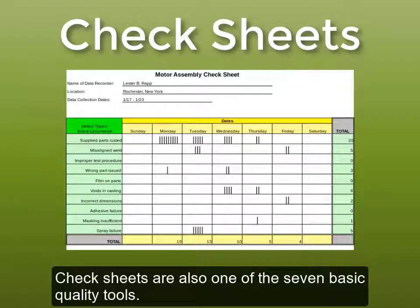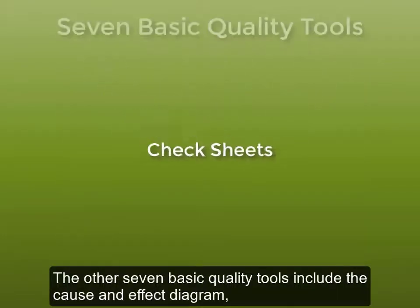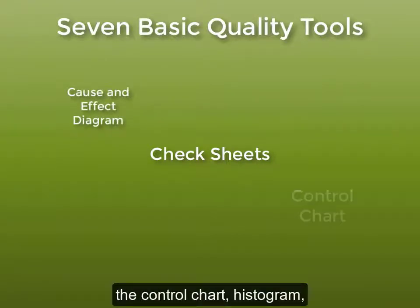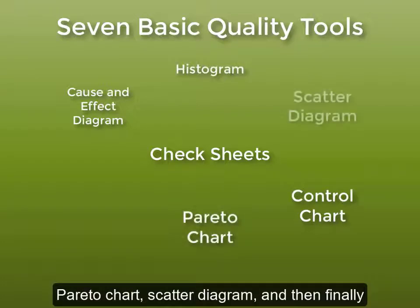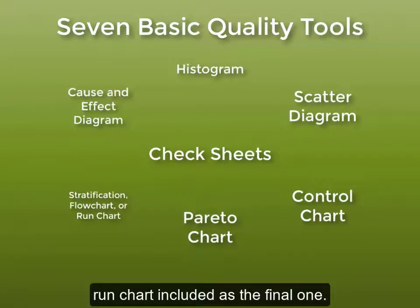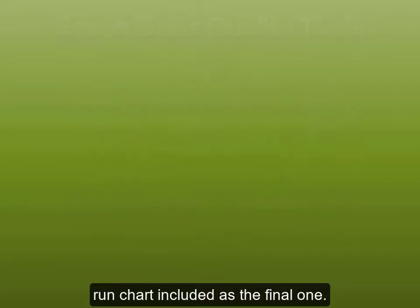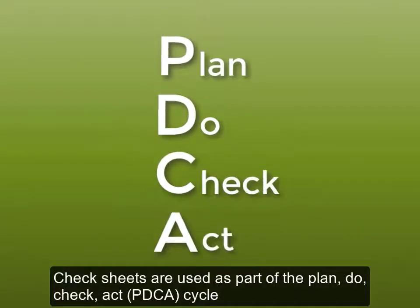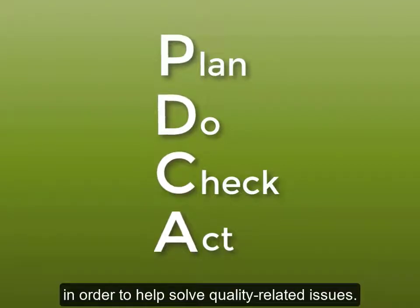Check sheets are also one of the seven basic quality tools. The other basic quality tools include the cause and effect diagram, the control chart, histogram, Pareto chart, scatter diagram, and then finally stratification — or sometimes you'll see a flow chart or a run chart included as the final one. Check sheets are used as part of the plan-do-check-act cycle in order to help solve quality-related issues.